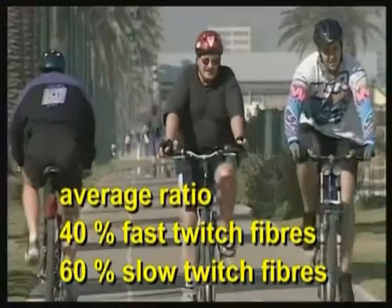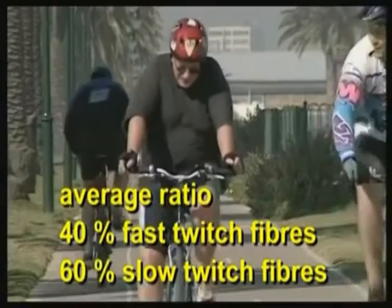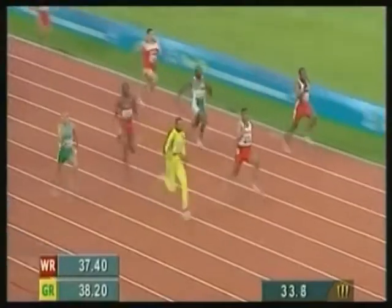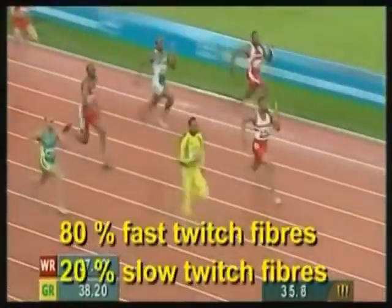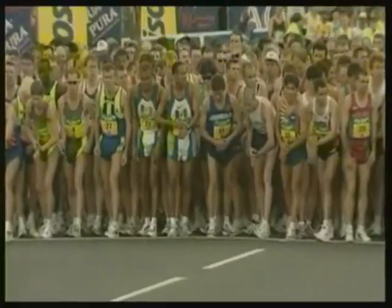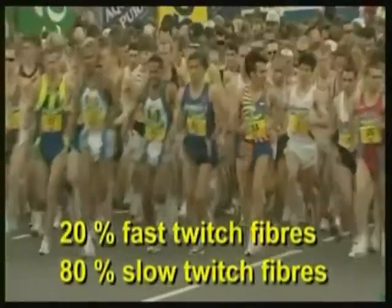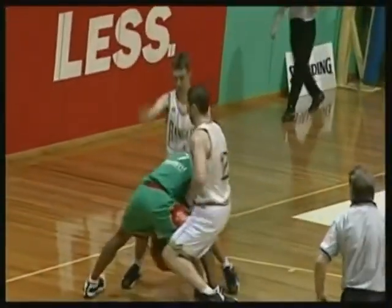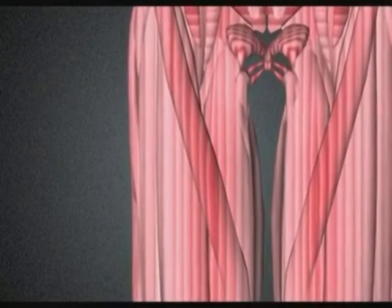The average person has a ratio of about 40 percent fast twitch to 60 percent slow twitch fibers, but there are many exceptions. For example, an elite sprinter may have a ratio of almost 80 percent fast twitch to 20 percent slow twitch fibers, whereas an elite marathon runner may have the reverse — 20 percent fast twitch to 80 percent slow twitch. However, most sports require a more even combination of fast and slow twitch fibers.